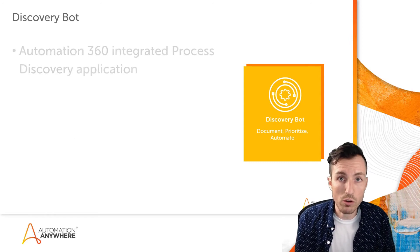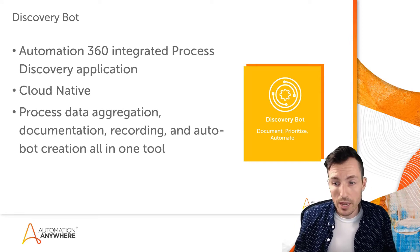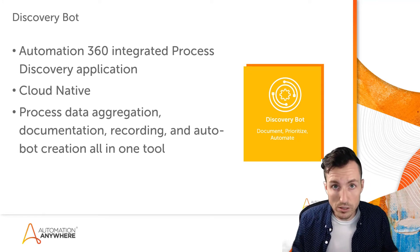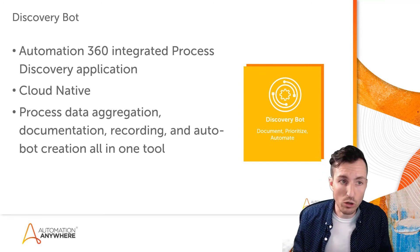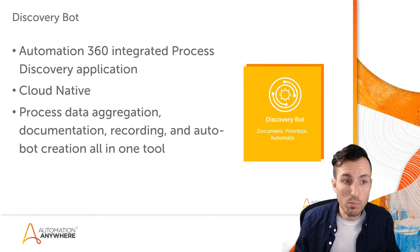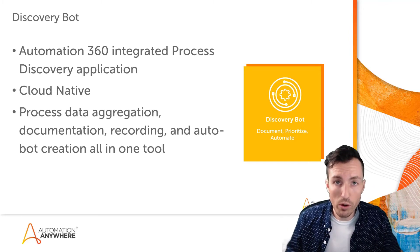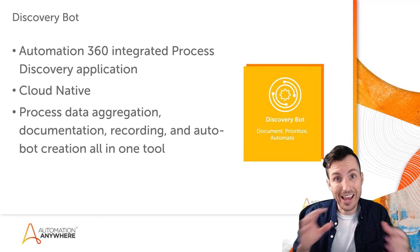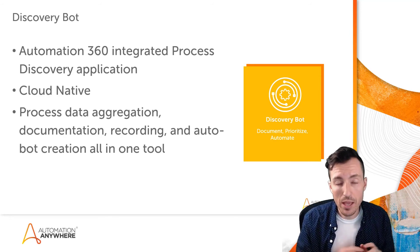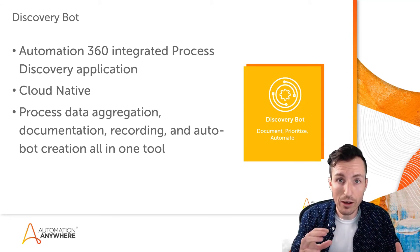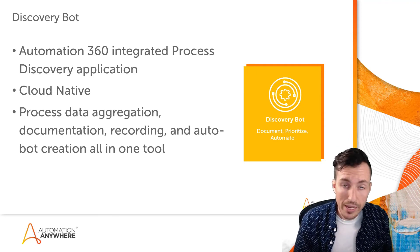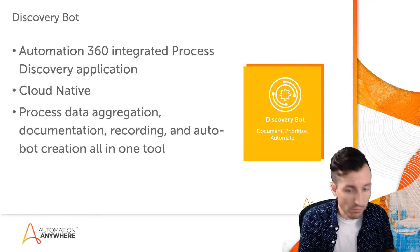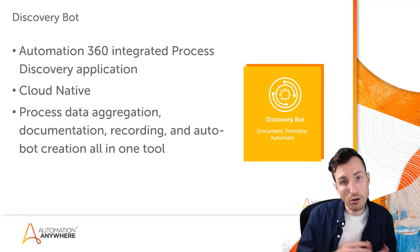But another way to do process discovery is through the use of Discovery Bot. Discovery Bot focuses on helping you document, prioritize, and automate your different opportunities so you can turn those more directly into bots. It's an Automation 360 integrated process discovery application that allows you to do recordings which capture screenshots, build out a flowchart, and give you a place to add notes about what you're doing at each particular step. It's a cloud-native application that allows you to do everything from process data aggregation, documentation, recording, and even bot creation all in one tool.